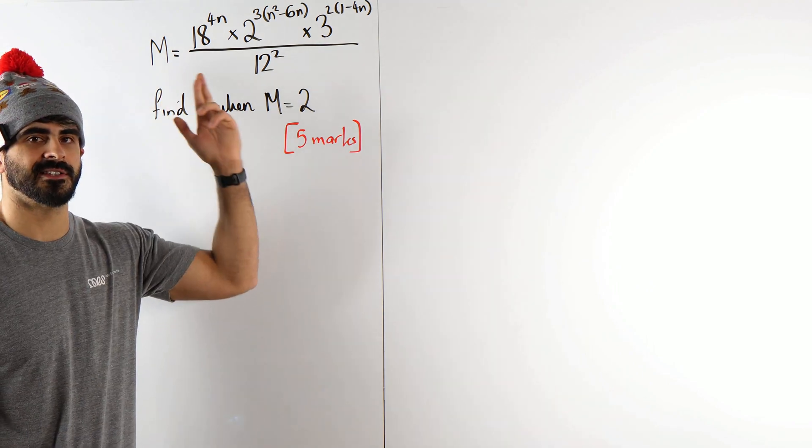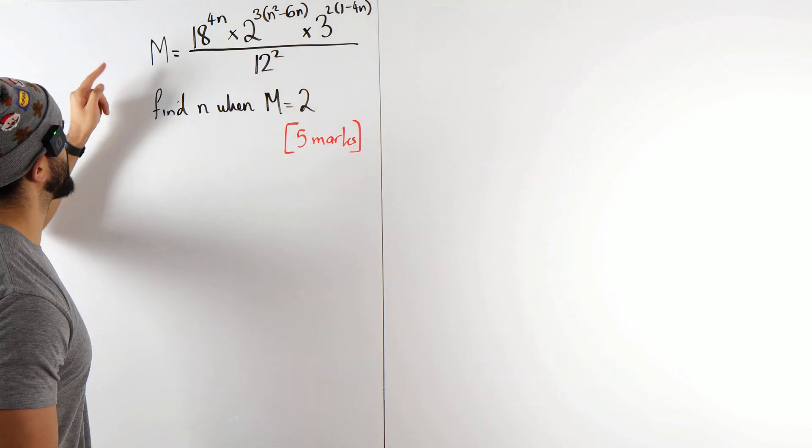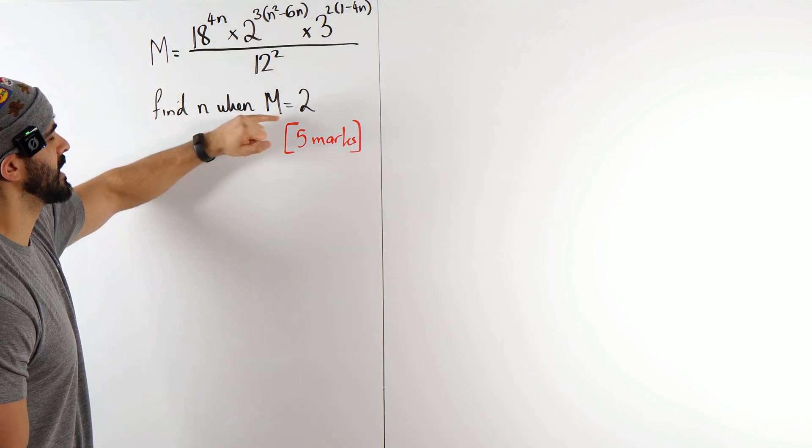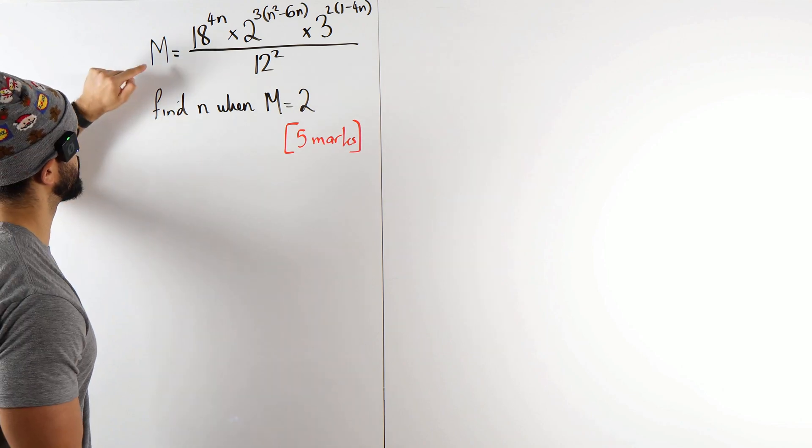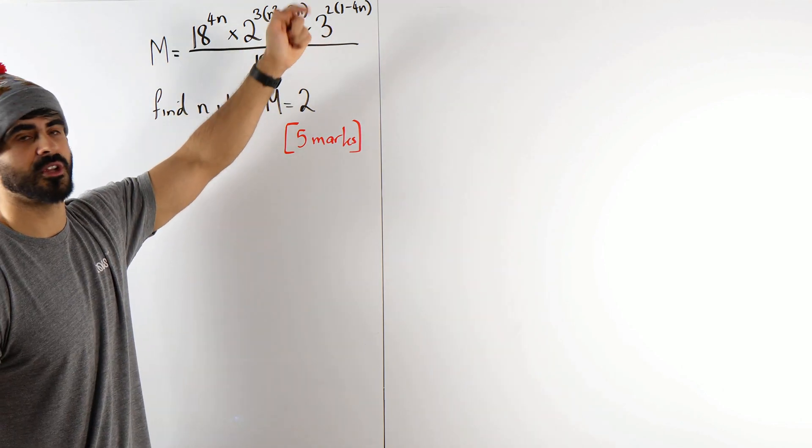This is indices because it's got powers in it. So we have m is all of this horrible looking stuff. Find the value of n when m is 2. So we're going to sub in m is 2 and somehow find the value of n which are all in the powers.